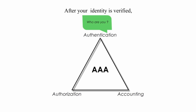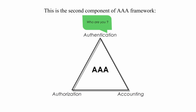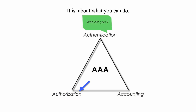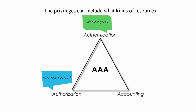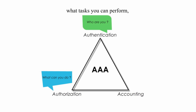After your identity is verified, you will be granted with some privileges, and this is the second component of AAA framework: authorization. It is about what you can do. The privileges can include what kinds of resources or services you can access, what tasks you can perform, and how long you can use these resources.